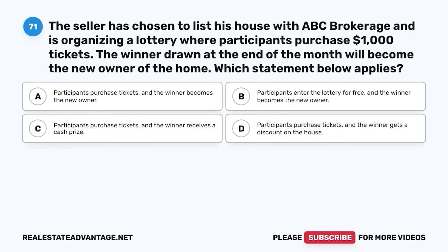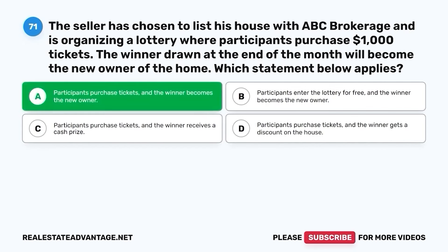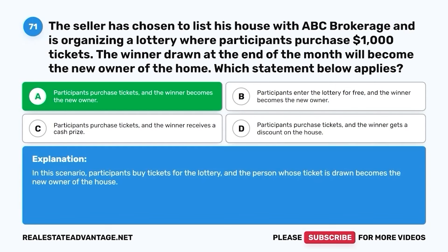Question 71. The seller has chosen to list his house with ABC brokerage and is organizing a lottery where participants purchase $1,000 tickets. The winner drawn at the end of the month will become the new owner of the home. Which statement below applies? A. Participants purchase tickets and the winner becomes the new owner. B. Participants enter the lottery for free and the winner becomes the new owner. C. Participants purchase tickets and the winner receives a cash prize. D. Participants purchase tickets and the winner gets a discount on the house. The correct answer is A. Participants purchase tickets and the winner becomes the new owner. In this scenario, participants buy tickets for the lottery and the person whose ticket is drawn becomes the new owner of the house.